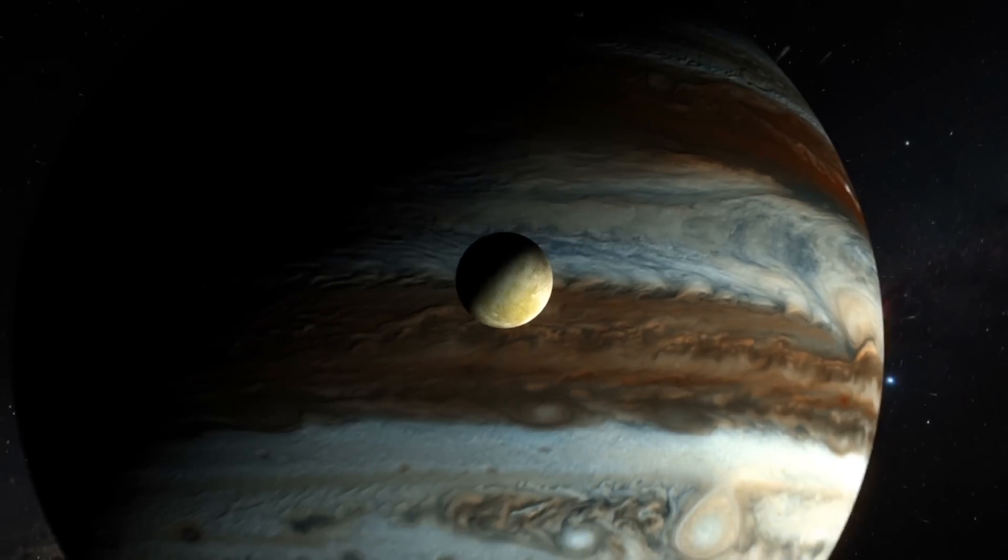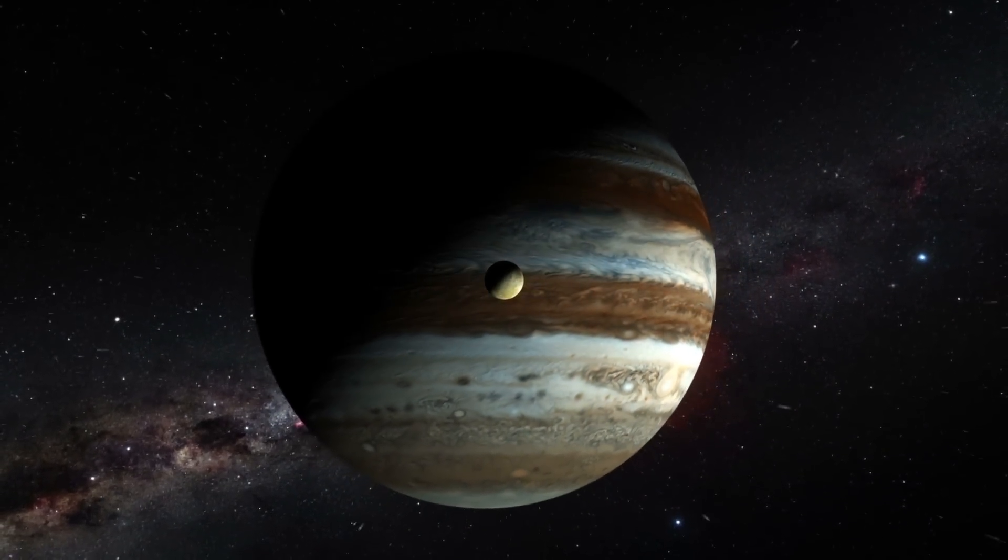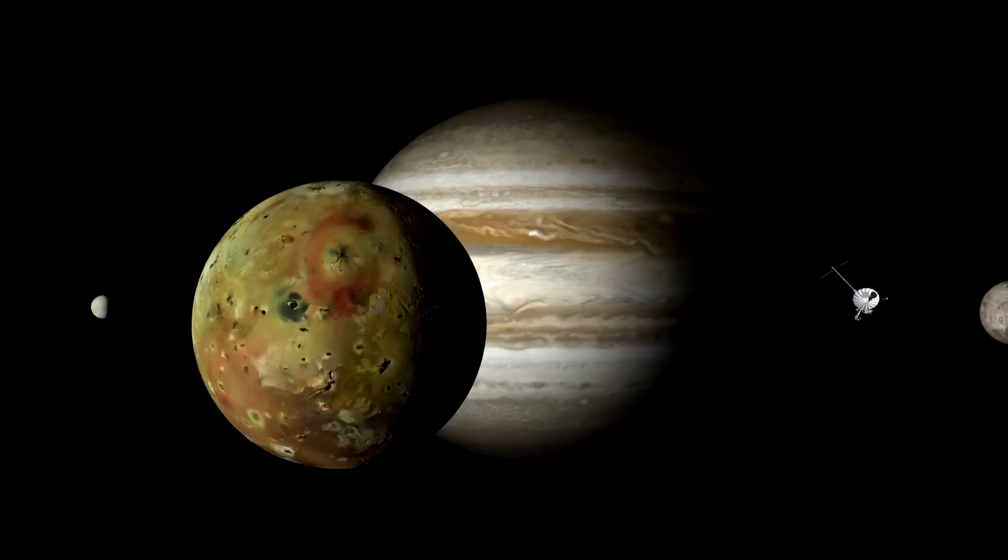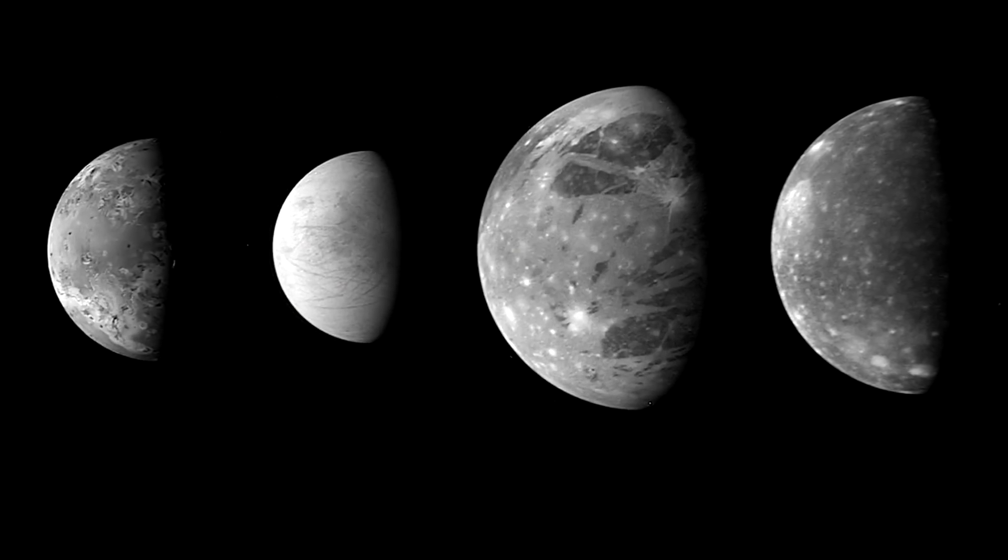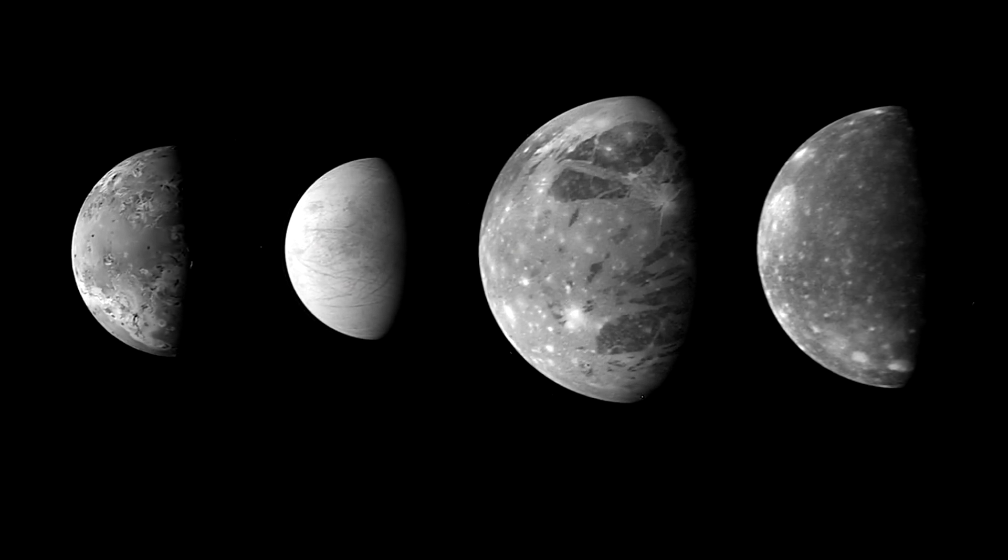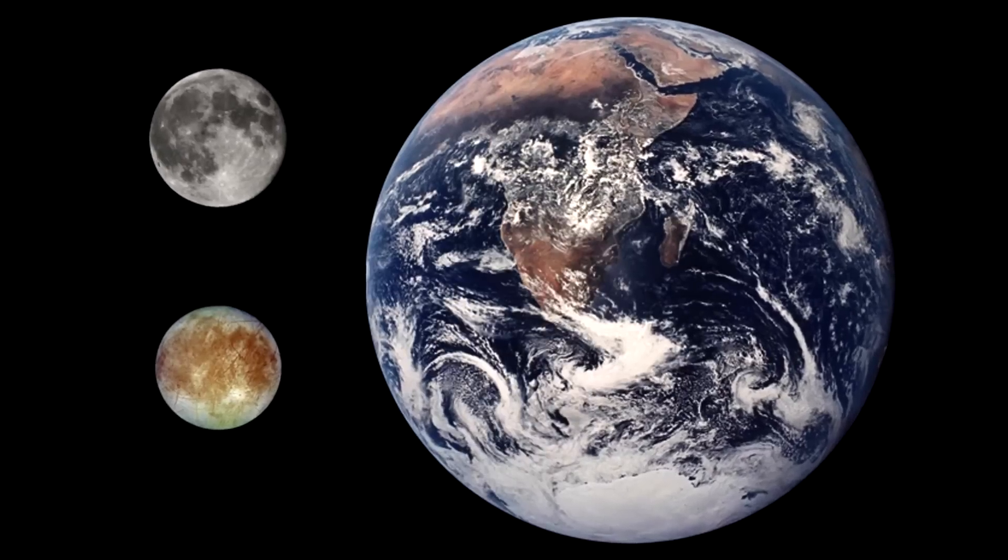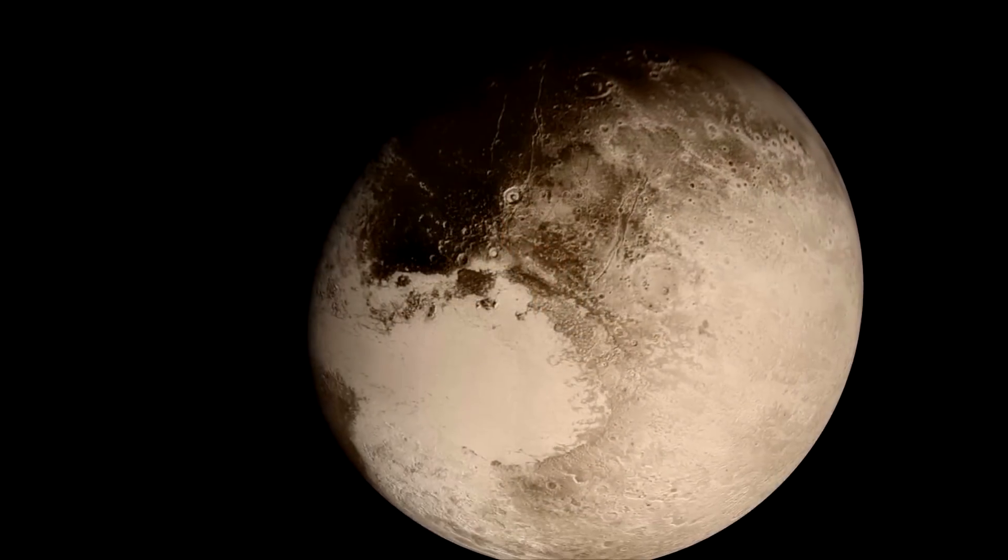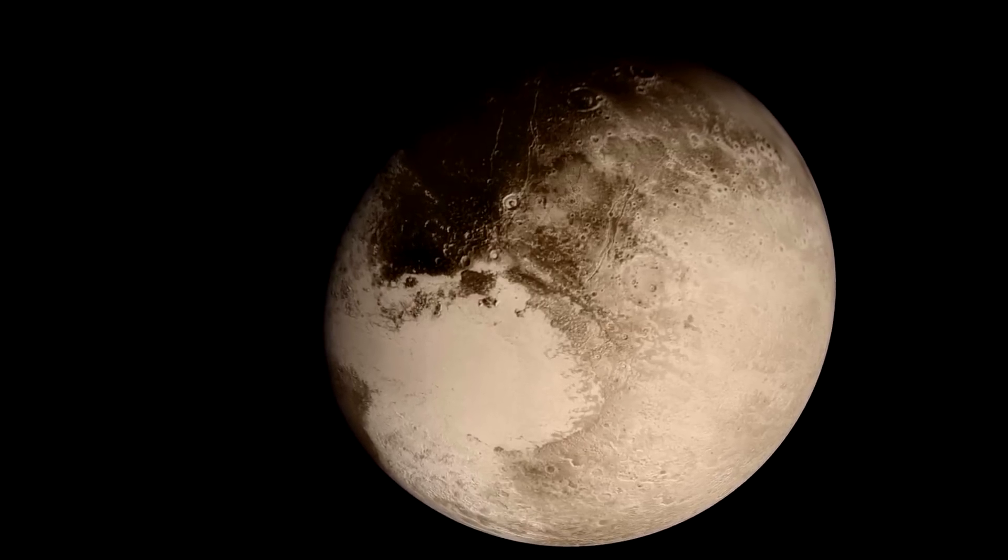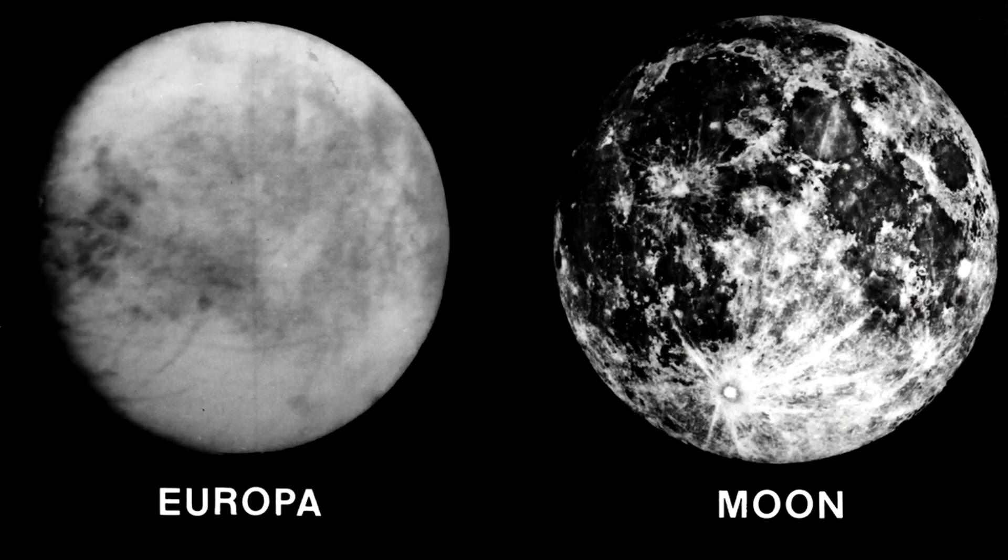Europa. Next, we bring things back a little closer to home, specifically to one of the moons of Jupiter. Jupiter has about 67 known moons, many of which have become a point of interest to scientists that are in search of extraterrestrial life. Europa is smaller than the Earth's moon but still larger than Pluto. Sorry, Pluto. Unfortunately, you're still not a planet.